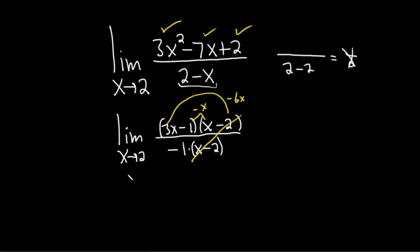And boom, these cancel. So this is the limit as x approaches 2. And we're left with 3x minus 1 over negative 1. At this point, we can go ahead and plug in the 2, right? There's no funky stuff going on.